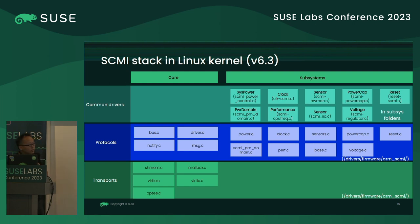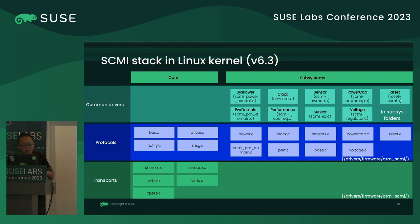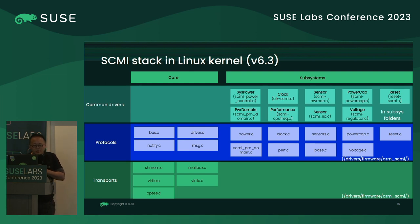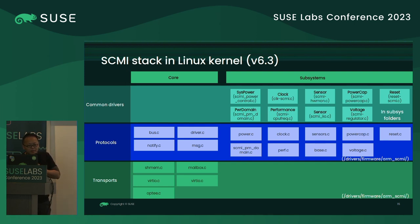In the transport layers, they are categorized by their channel type. For example, shared memory could have its own isolated driver file. These transport layers truly handle the data transmissions.